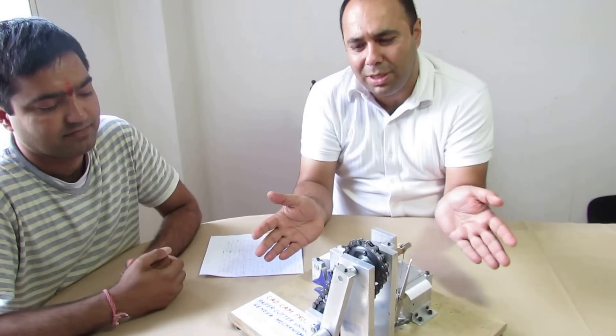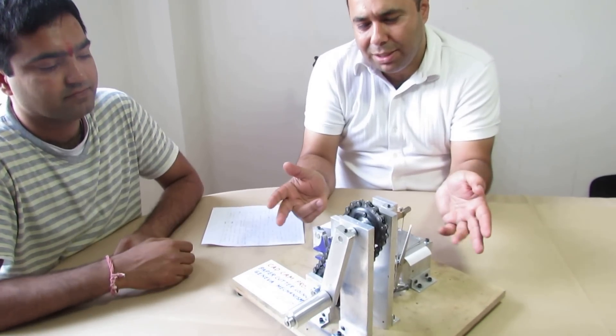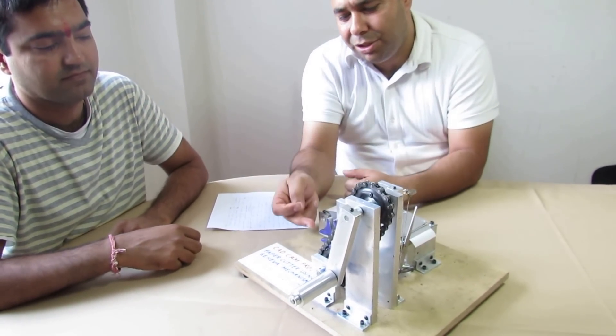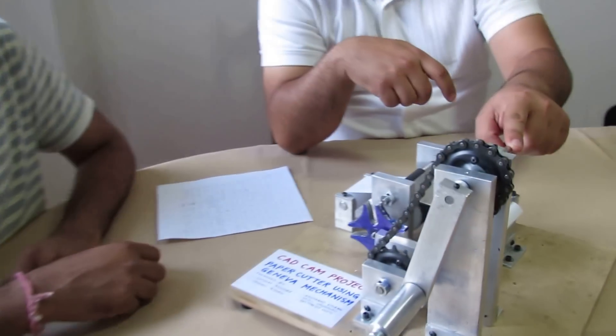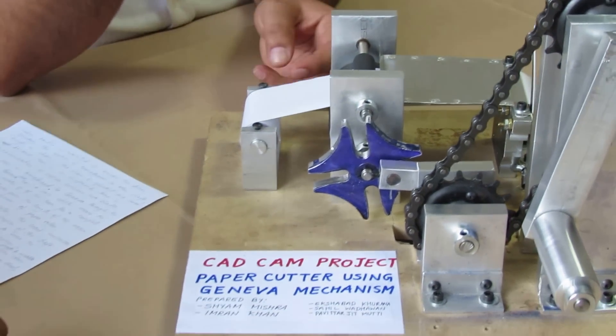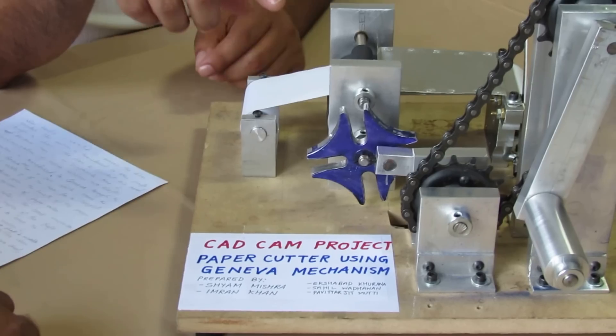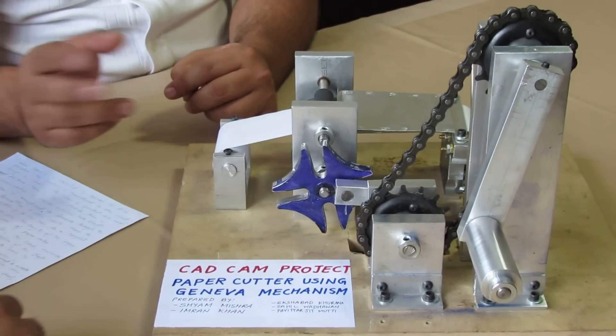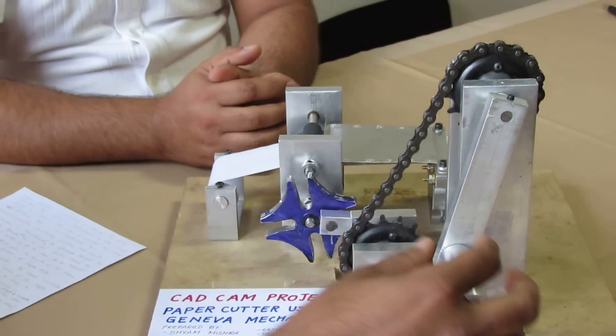And this is our CAD CAM project. It is a paper cutter using the Geneva mechanism and the crankshaft mechanism. So it will cut the papers in equal length. Now we are going to demonstrate how it works. So Mr. Shia Mishra, can you go ahead? Yeah, sure.